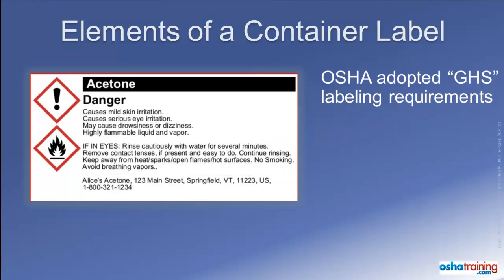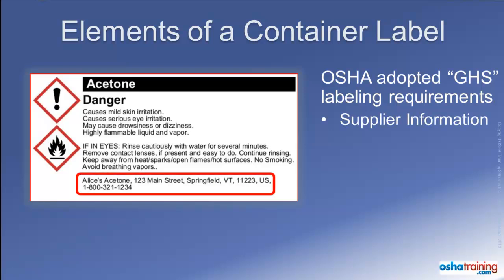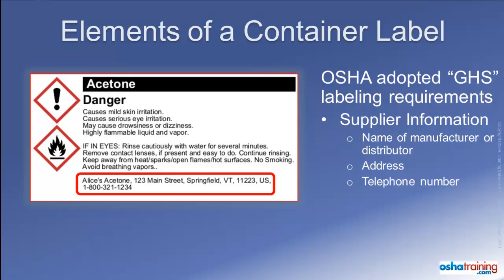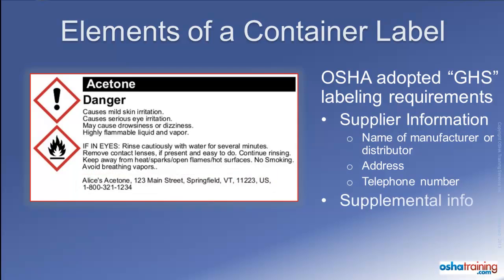GHS-compliant labels must also display supplier information — the name of the manufacturer or distributor, as well as their street address and telephone number. On some labels, you may also see supplemental information about the product, such as directions for its use and possibly an expiration date.